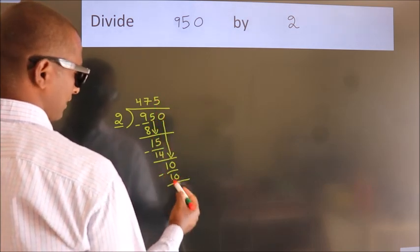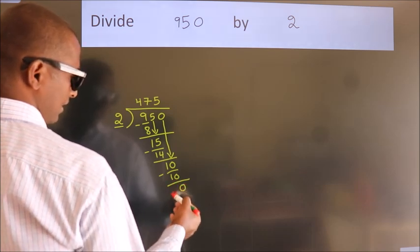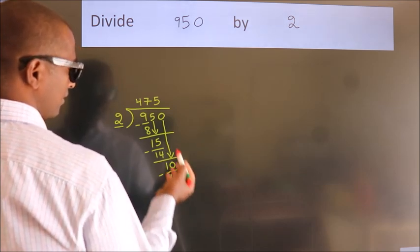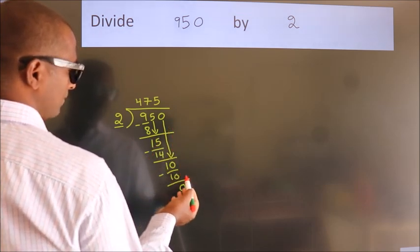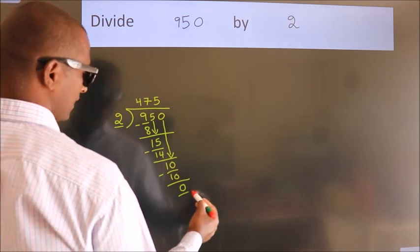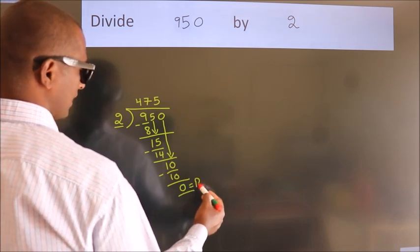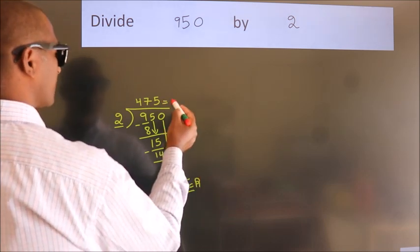Now we subtract. We get 0. After this, no more numbers to bring it down. So we stop here. This is our remainder. This is our quotient.